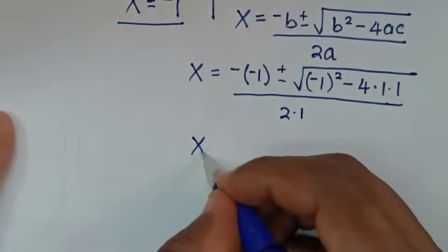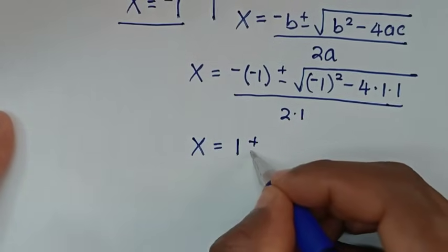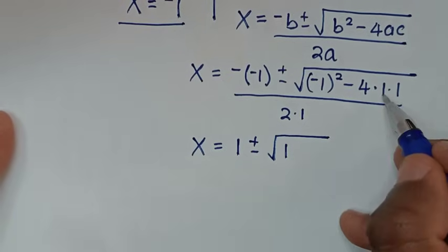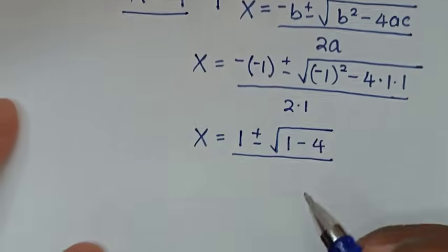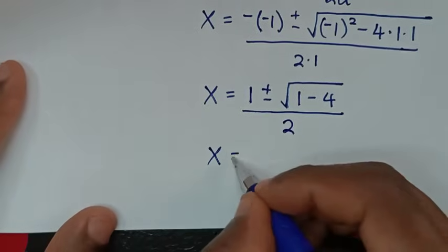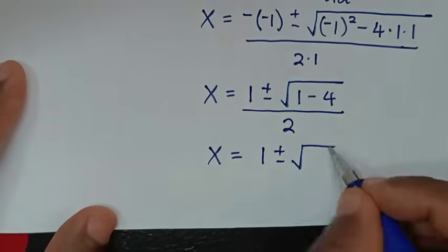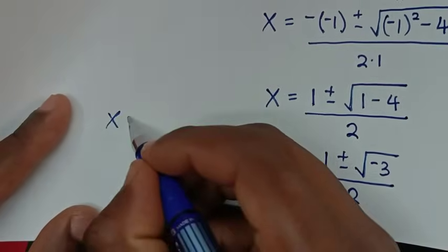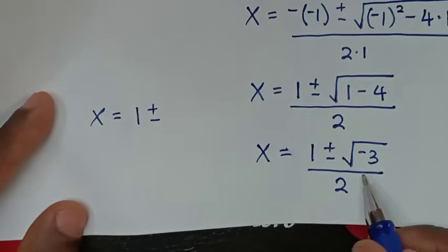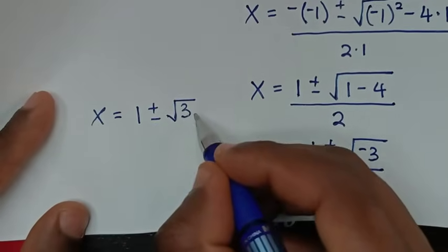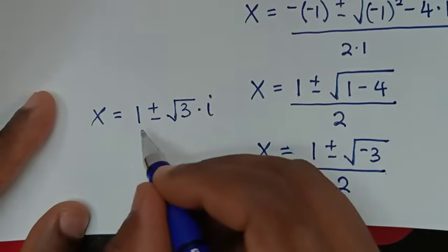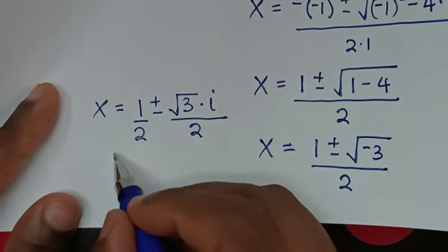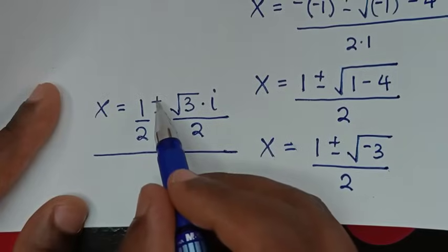Then in the next step it will be x is equal to negative and negative gives positive 1, plus or minus square root of negative 1 squared is 1, minus 4 times 1 times 1 is negative 4, over 2. Then x is equal to 1 plus or minus square root of 1 minus 4 which is negative 3. Then x is equal to 1 plus or minus the square root of negative 3, which is the same as square root of 3 times square root of negative 1 which is i, all over 2. We divide both parts by 2, giving us two more values of x.